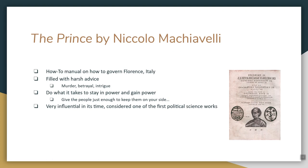The Prince by Niccolò Machiavelli — I've had to read this book once and did survive, believe it or not. It's a little boring and dry, but very influential for its day. It's a how-to manual on how to govern Florence, basically telling the Medici family how to be a better leader. It's filled with harsh advice: sometimes you have to murder people, sometimes betray people, do whatever it takes to stay in power — sometimes give the people a little, and sometimes slap them in the face. The Prince is considered one of the first political science works of all time and is still read and influential today.